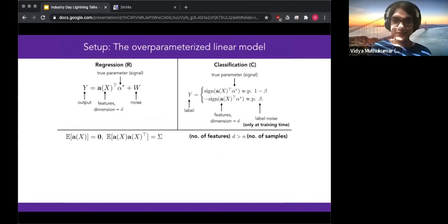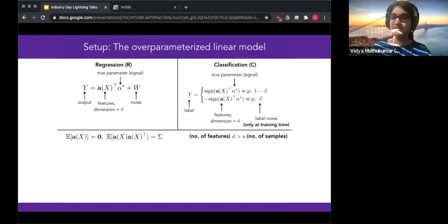So the basic setup for studying these questions is the over-parameterized linear model. And what that means is our output is a function of some linear combination of d-dimensional features. So in the case of regression, this is just the linear model with additive, say, sub-Gaussian noise. And in the case of classification, we're using what is called the random classification noise model, where the label could be equal to the sign of a linear combination of these features with some probability. And with some non-negligible probability, the label could also be flipped.